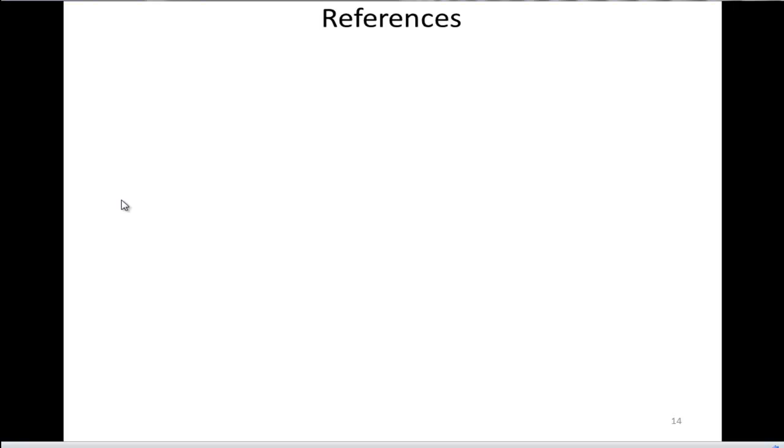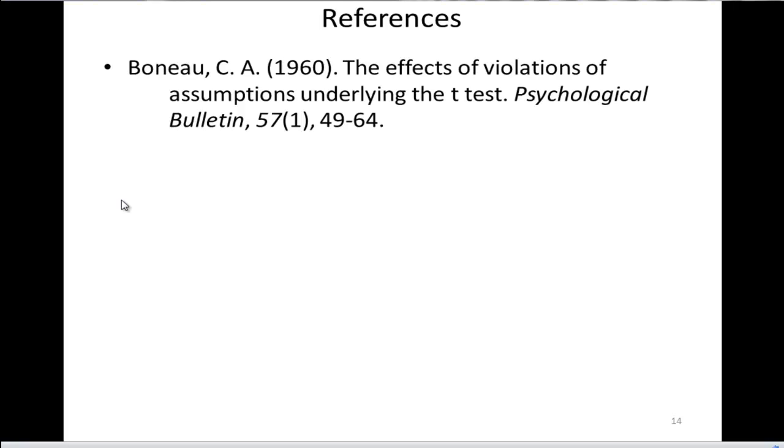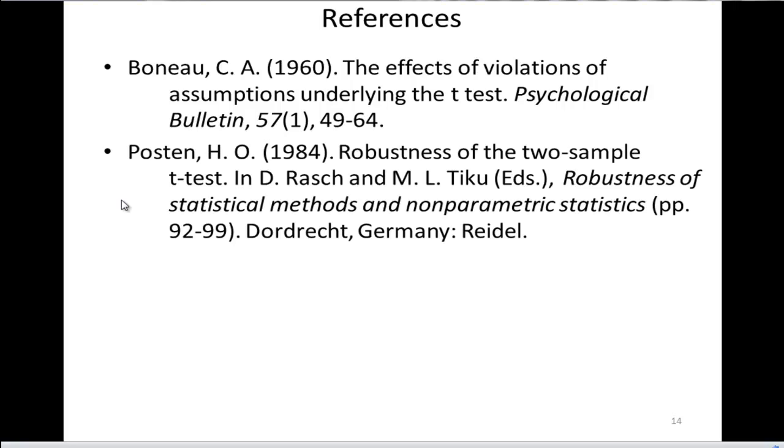So here are some references to the argument that the t-test and ANOVA are robust to non-normally distributed data. So Boneau, back in 1960, reviewed the research to date and also did his own simulation, published his research in Psychological Bulletin.